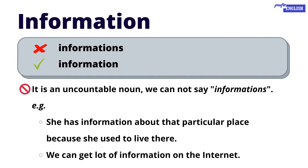What do we say — 'informations' or 'information'? Information is the correct form. Don't say 'informations'; we don't put an S at the end because it is completely wrong. Examples: 'She has information about that particular place because she used to live there.' 'We can get a lot of information on the internet.'